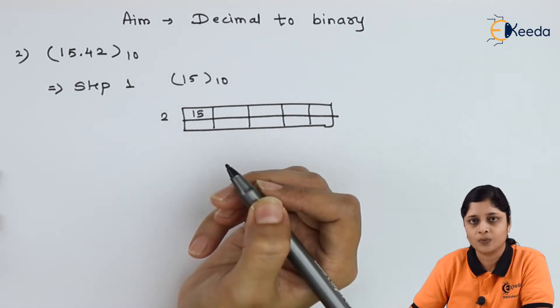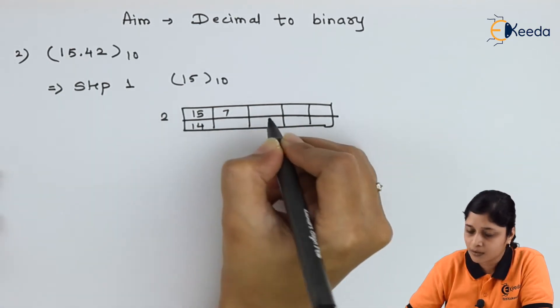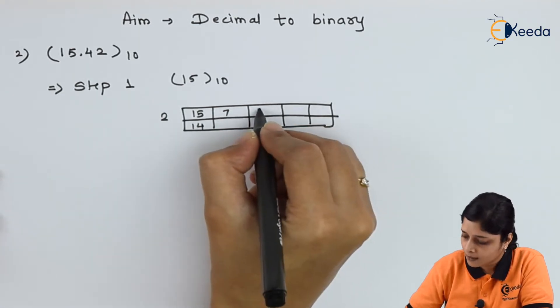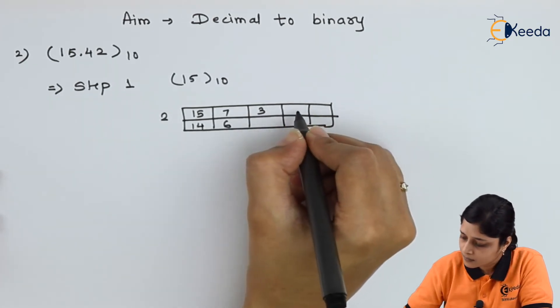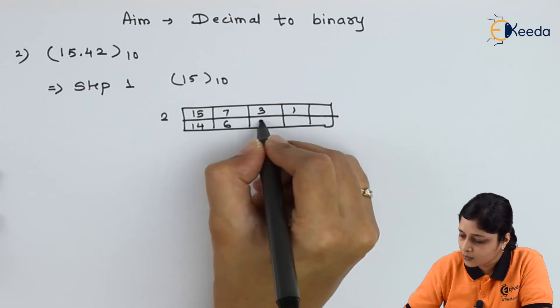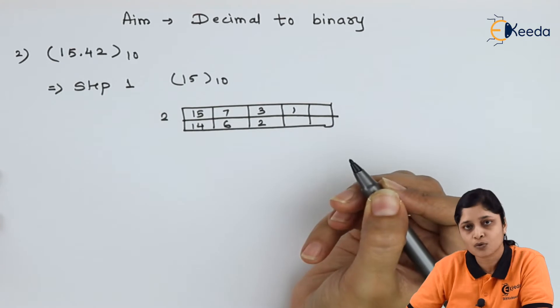And make a division. 7 to the 14, 3 to the 6, 1 to the 2. At last you get 1. So stop.